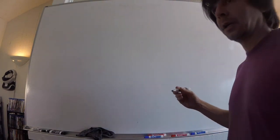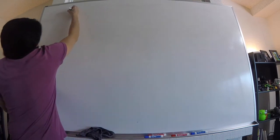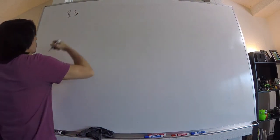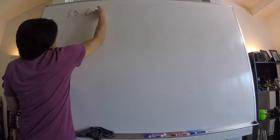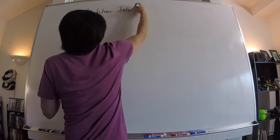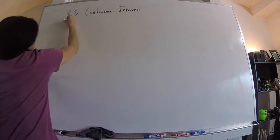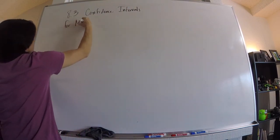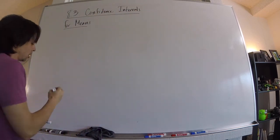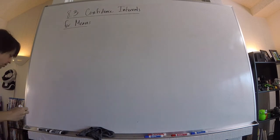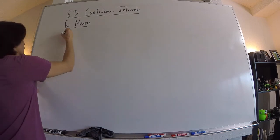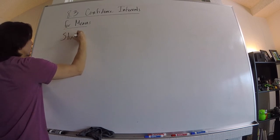We're going to do section 8.3, which is on confidence intervals for means. We just did confidence intervals for proportions, now we're doing it for means. Before we get started, however, we need to talk about a new distribution called the Student's T-Distribution.